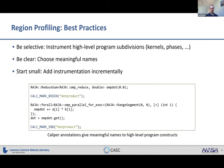Best practices for instrumenting a large code: first, be selective. These instrumentation annotations are meant to highlight high-level program subdivisions — kernels, phases, and such — not every single line or function. These annotations are not meant to pinpoint specific bottlenecks but instead allow you to study the performance of these kernels or phases across different program configurations.